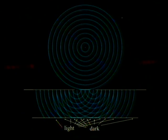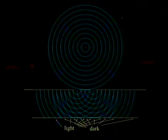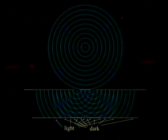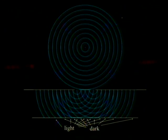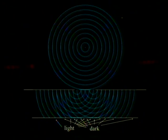Depending on how close the slits are together, you may have two, three, five, or three hundred different overlaps of that kind. That's light as a wave. A gentleman named Young was able to show that light going through two slits has interference, and therefore behaves like a wave.